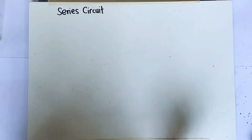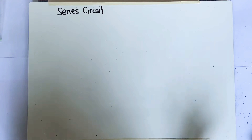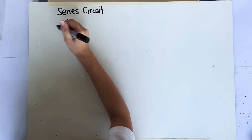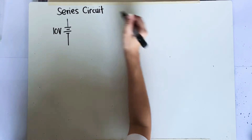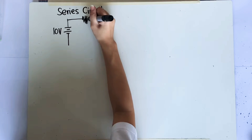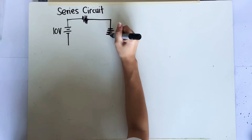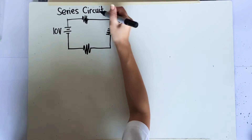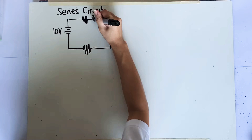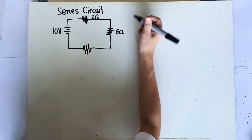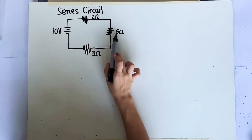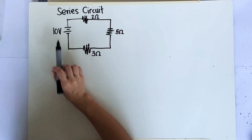Let's try to understand what are the different laws that govern each connection. Let's start with a series circuit again. We have a simple series circuit with an applied voltage — a battery worth 10 volts connected to three resistors all in series: 2 ohms, 5 ohms, and 3 ohms. This is a simple series connection of three resistors with one impressed or applied voltage.